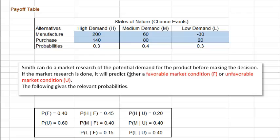If a market research is done before making the decision, it will predict either a favorable market or an unfavorable market. Here we have the conditional probabilities of different chance events given a favorable prediction. For instance, if the prediction is favorable, the probability of high demand is 0.45. So the favorable prediction raises the probability of high demand from 0.3 to 0.45. Given an unfavorable prediction, the probabilities of different demand levels are given here — notice the unfavorable prediction raises the probability of low demand from 0.3 to 0.4. We are also given the probabilities of different predictions: the probability of favorable prediction is 0.4 and the probability of unfavorable prediction is 0.6.